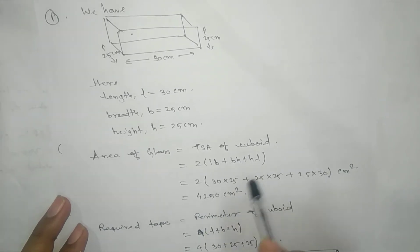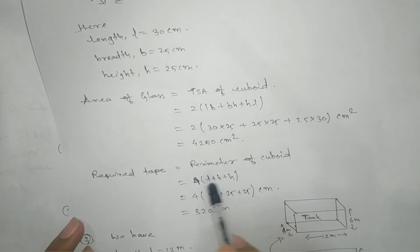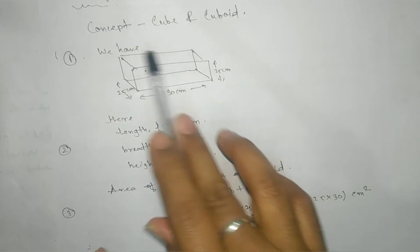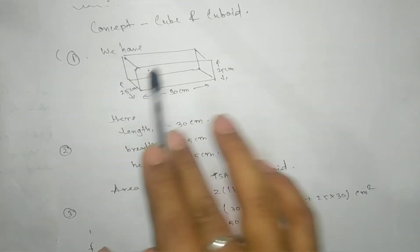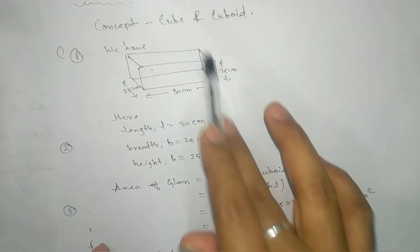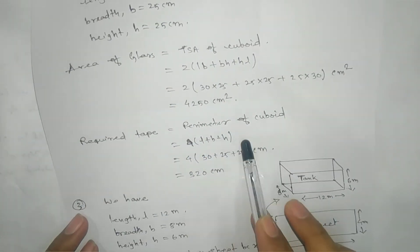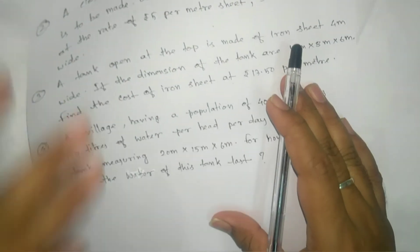We'll use the formula, substitute the values and get the answer. Required tape means perimeter of cuboid. Here there are four lengths, four breadths and four heights. That's why: four times (l plus b plus h). Substitute here and we'll get the answer.